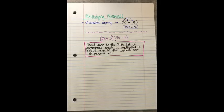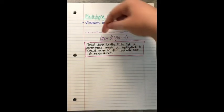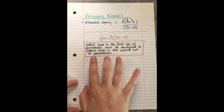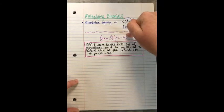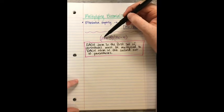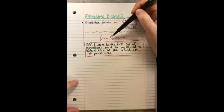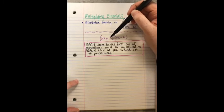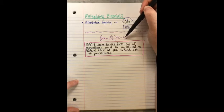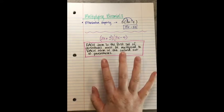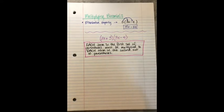So the 2x and the 5 — each term in the first set — have to be multiplied to each term in the second set. That means 2x gets multiplied by 3x, and 2x also gets multiplied by negative 4. Then the 5 gets multiplied by 3x, and the 5 also gets multiplied by negative 4. They each kind of have to partner up.